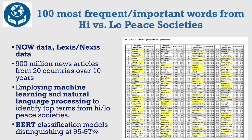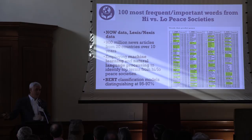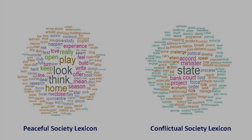We apply machine learning and natural language processing to understand whether there are linguistic differences in news reporting from high-peace and low-peace societies. And we have found them — they allow us to classify. You can take an article from any of these newspapers and within 95% accuracy be able to classify what type of society it comes from. And it's not the kind of content that you would think.